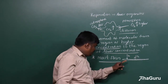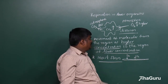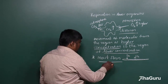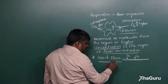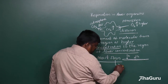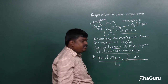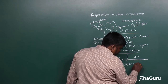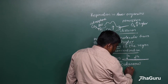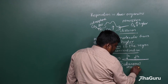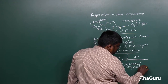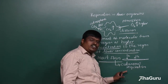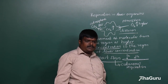Again in earthworms, leeches, and amphibians, the same diffusion process takes place, but it occurs through the moist skin. Such type of respiration which occurs through the skin, we call it as cutaneous respiration. The respiration that occurs through the skin is called cutaneous respiration.